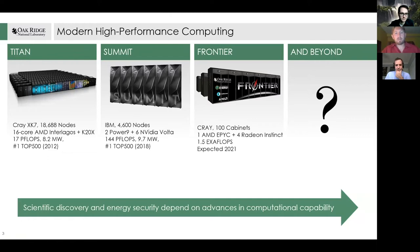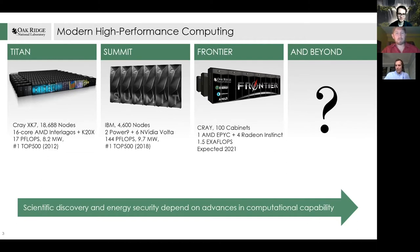Summit is an accelerated computing system consisting of graphical processing units attached to CPUs in a massively parallel configuration. It is one of a series of supercomputers taking this accelerator approach to building computational capability. The next system, called Frontier, will use the same CPU-GPU design, but what lies beyond Frontier is a big question — we're not sure we can build systems beyond the exascale regime without adopting new technologies.